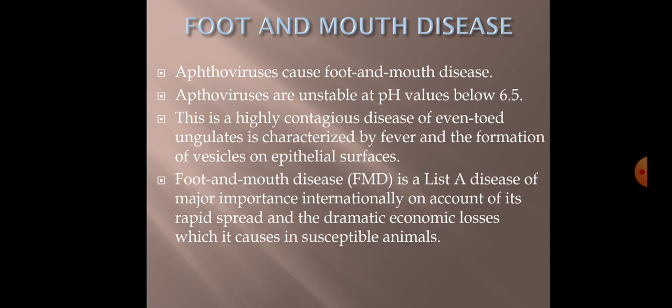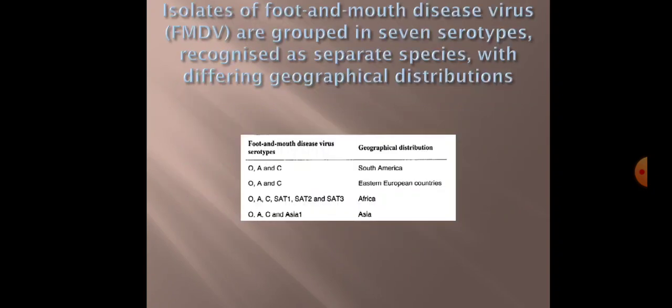FMD is a List A disease of major economic importance internationally, due to its rapid spread and dramatic economic losses in susceptible animals — entire farms can get contaminated. The OIE has designated certain diseases under List A, List B, and List C, and FMD falls under List A. All FMD virus isolates are grouped into seven serotypes, recognized as separate species with different geographical distributions.